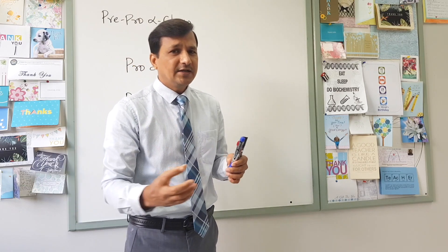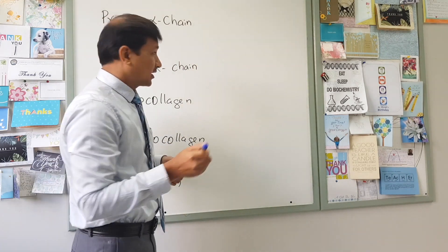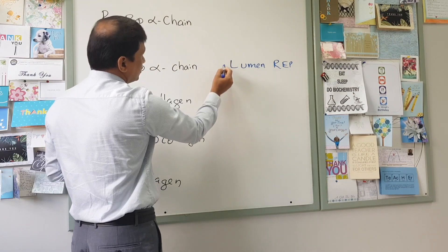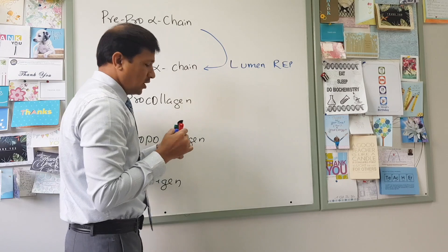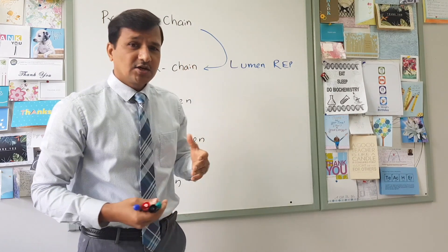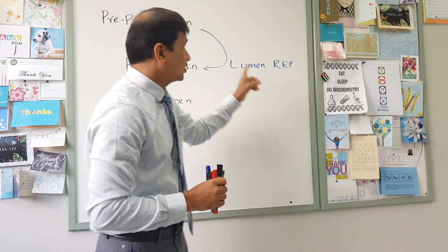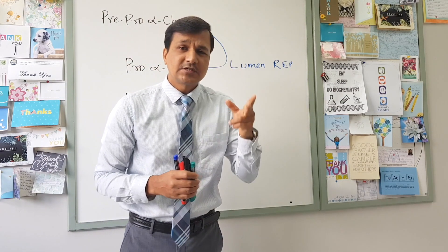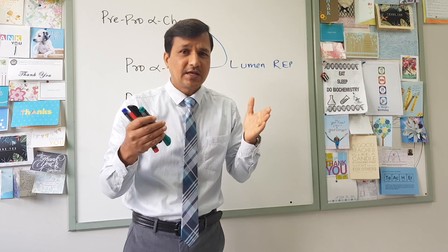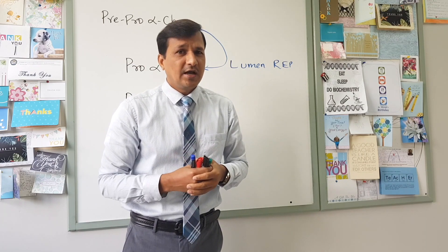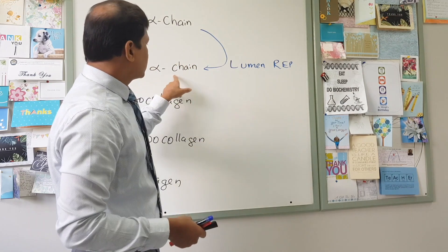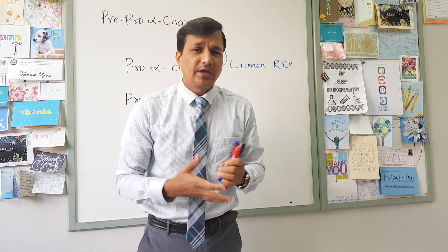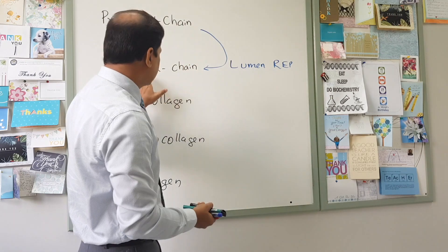This signal peptide leads the pre-pro-alpha chain into the lumen of the rough endoplasmic reticulum, where the signal sequence is clipped and digested, and the remaining chain is referred to as the pro-alpha chain. Since each collagen molecule needs three alpha chains, you need three pro-alpha chains, and there will be modifications on these pro-alpha chains.